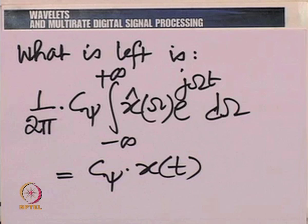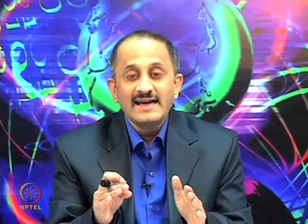The constant c_ψ actually tells us the factor by which x(t) has been multiplied in the process of reconstruction. Now let us look at the integral we wish to make independent of ω more carefully.